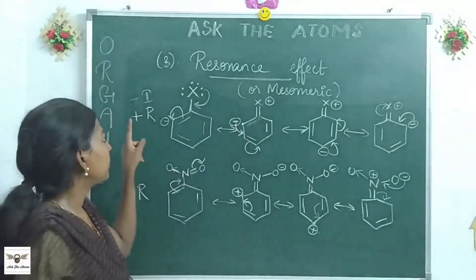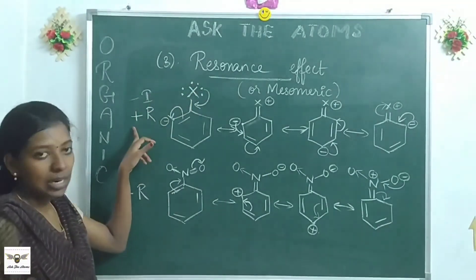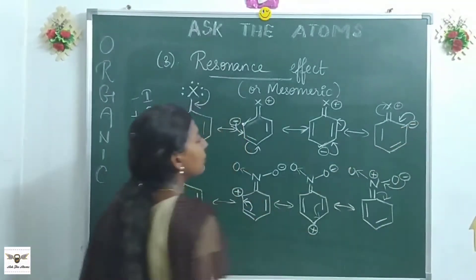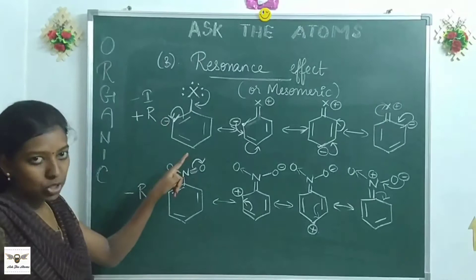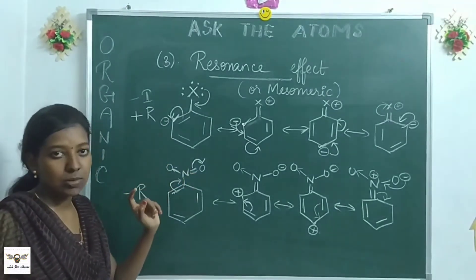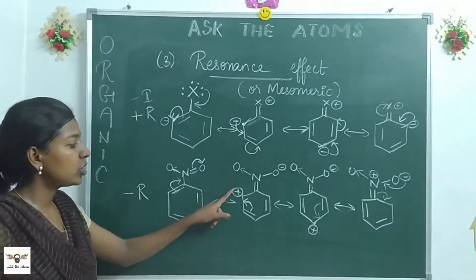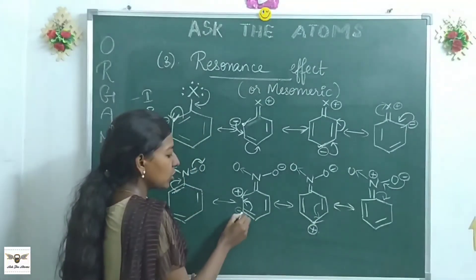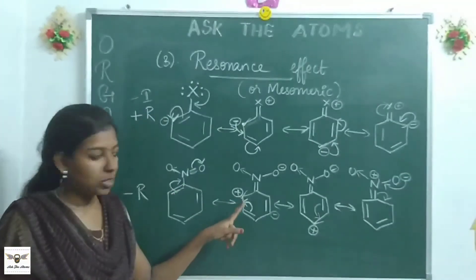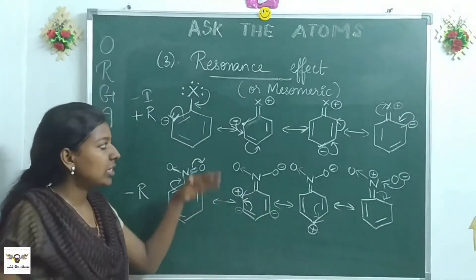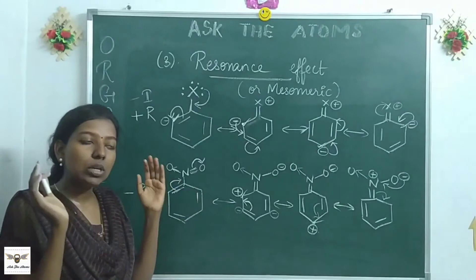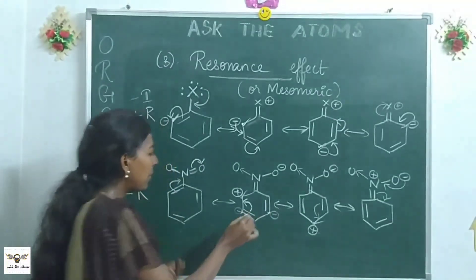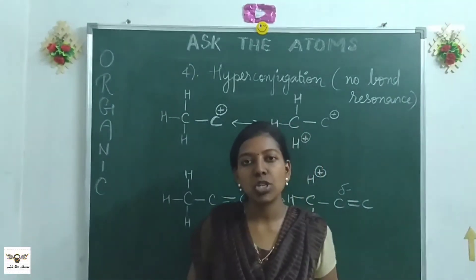In plus R compounds, you can see negative charge at ortho and para positions, which means those positions are susceptible to electrophilic attack — so plus R groups are ortho- and para-directing. In minus R compounds, you see positive charge at ortho and para positions, meaning the meta positions carry negative charge, so electrophilic attack occurs at the meta position. Therefore minus R groups are meta-directing. The last important topic is hyperconjugation.